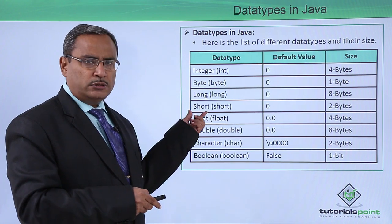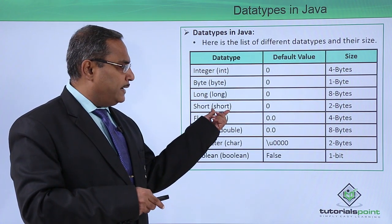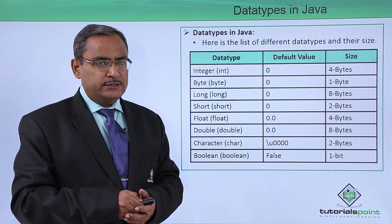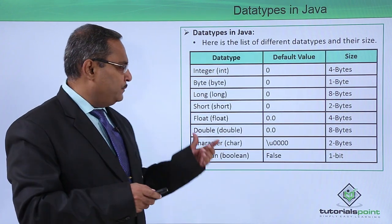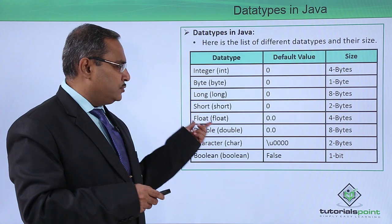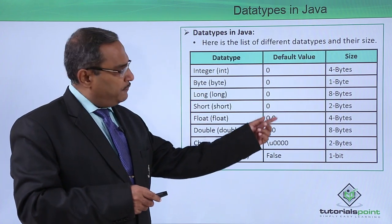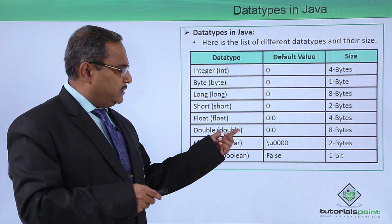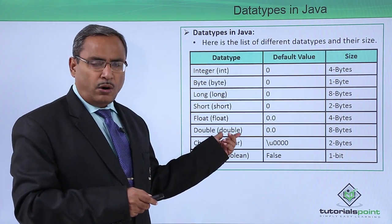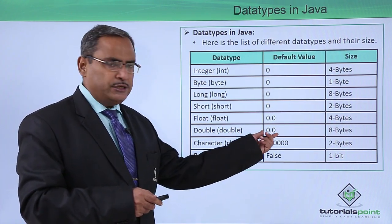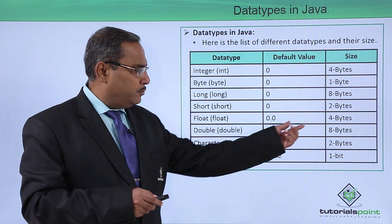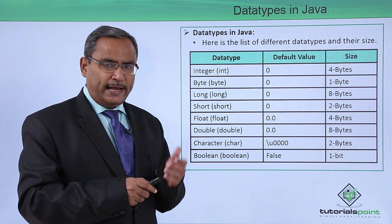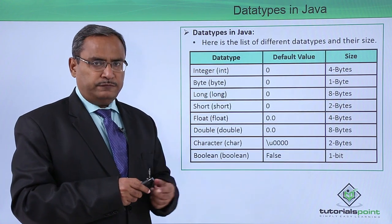Short, written as 'short' in Java code, has a default value of zero and occupies two bytes of memory. Float has a default value of 0.0 and occupies four bytes. Double, written as 'double' in lower case, has a default value of 0.0 and eight bytes of storage for one double type variable.